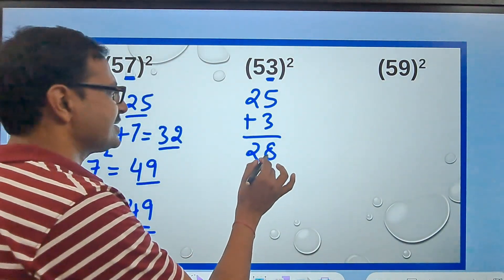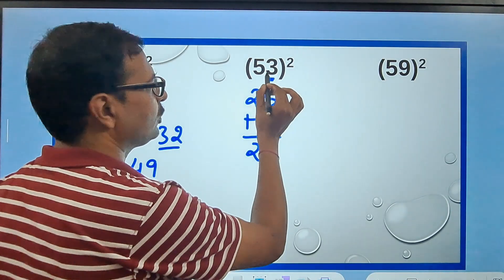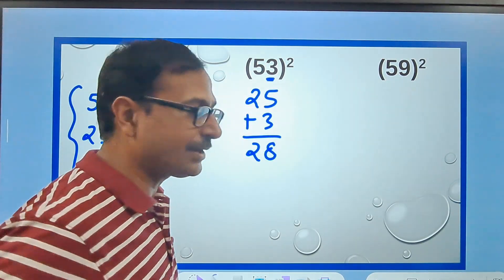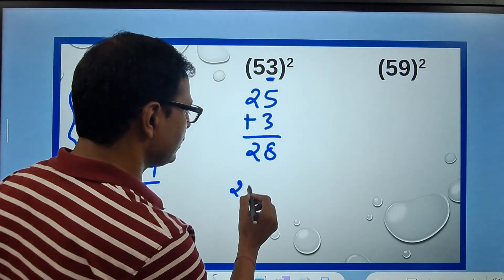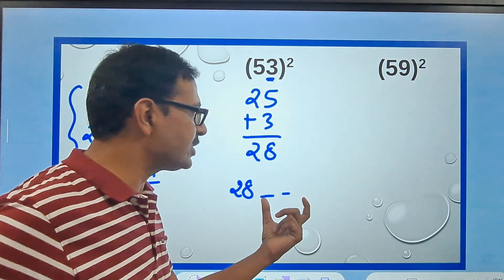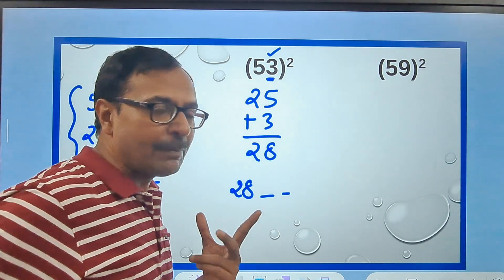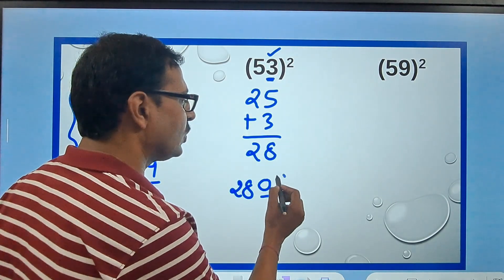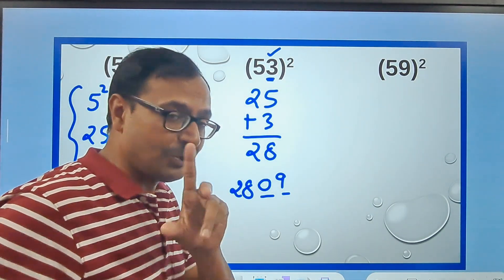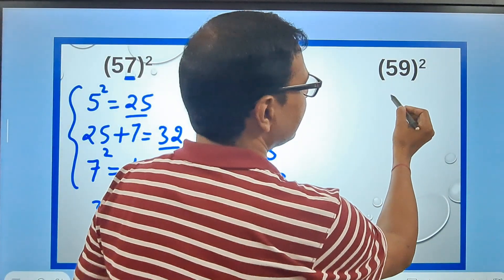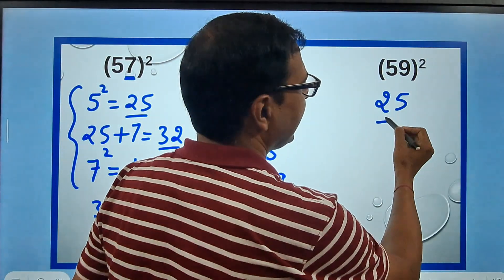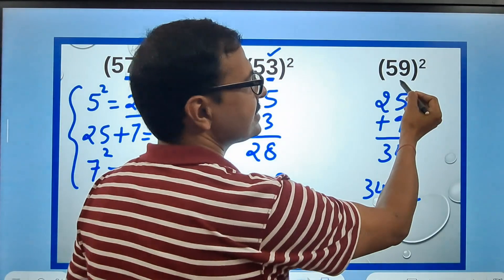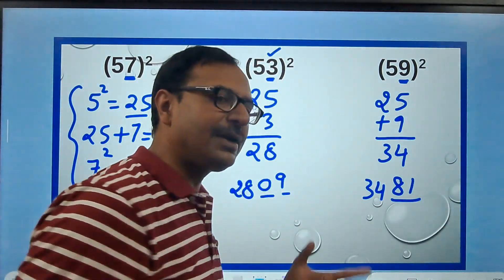Once you have 28, you need to follow it with 2 more digits — the square of the unit digit. Here the digit is 3, and 3² = 9, which is a single digit number, so you write 09 to complete the answer: 2809. Likewise for 59: 25 + 9 = 34, followed by 9² = 81, giving 3481.